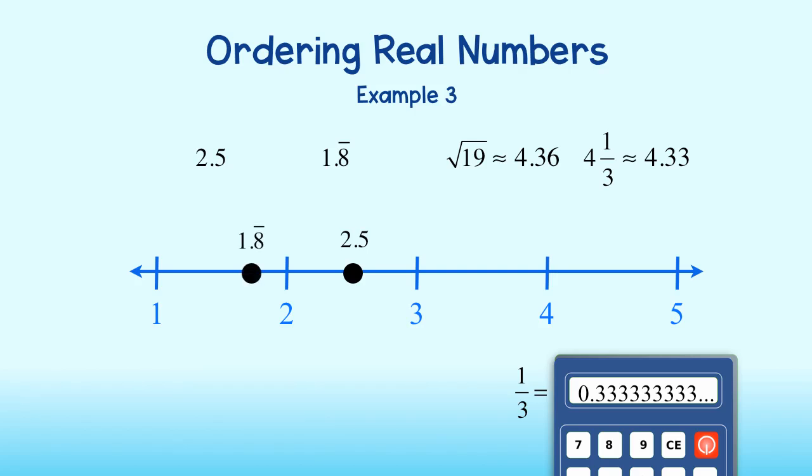The square root of 19 we will place just before the halfway mark between 4 and 5. And since 4 and 33 hundredths is less than 4 and 36 hundredths, we will place 4 and 1 third just about here.